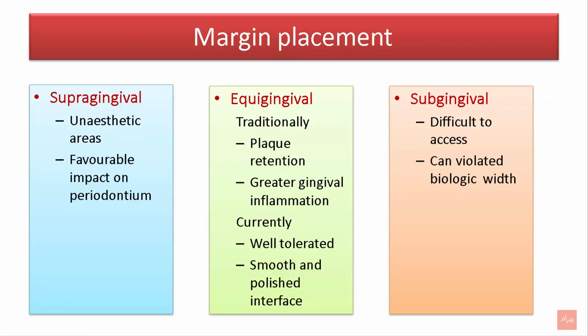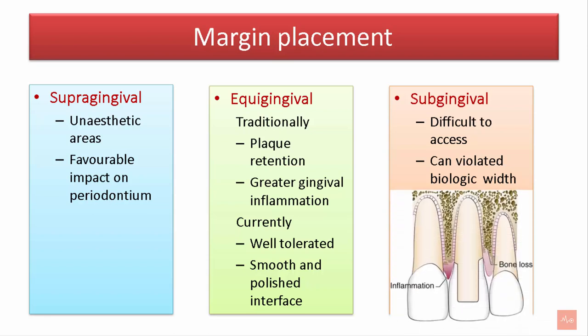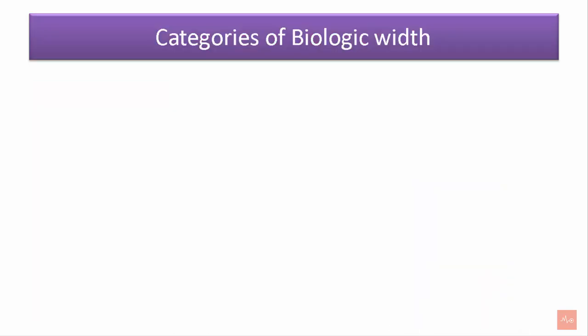Margin placement can be supragingival, equigingival, or subgingival. Supragingival margins are placed in unaesthetic areas but have a favorable impact on the periodontium. Equigingival margins were previously considered plaque-retentive and associated with greater gingival inflammation; however, with new materials they are considered well-tolerated and a smooth polished surface can be produced. Subgingival restorations are difficult to access and can violate biological width. Certain categories of biological width help determine which types of restorative margins can be placed.